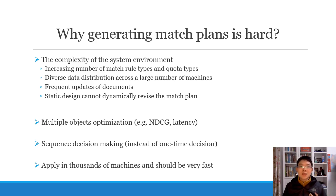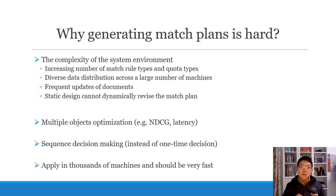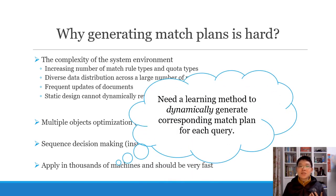Another difficulty is multiple objective optimization, because we want to achieve both higher relevance and low latency. In addition, it is a sequential decision-making process rather than a one-time decision. As discussed, a match plan is composed of a sequence of rules containing discrete rule types and continuous quotas. Lastly, the algorithm should be successfully applied across thousands of machines and should be very fast. In general, we need our learning methods to dynamically generate corresponding match plans for each query.